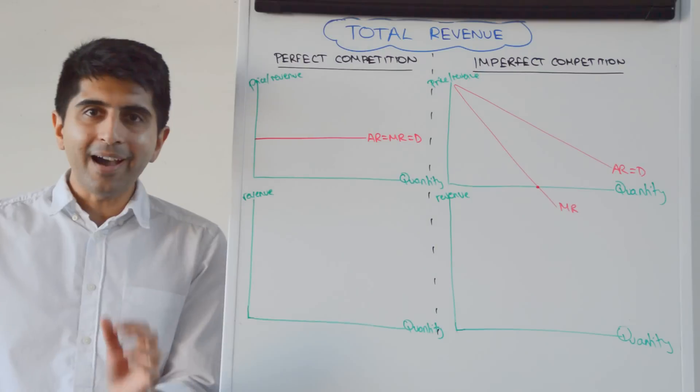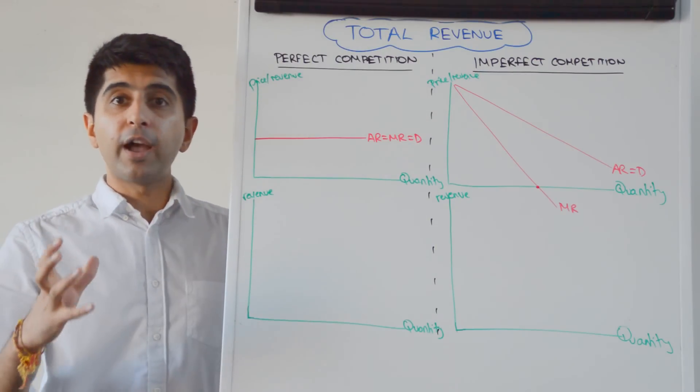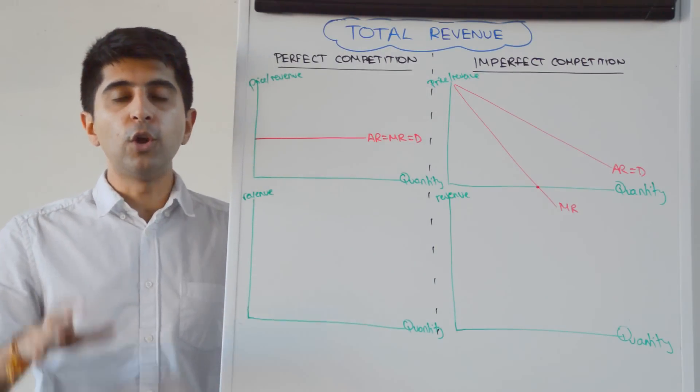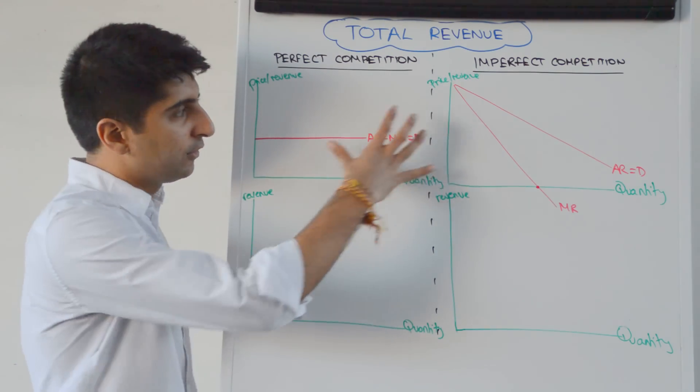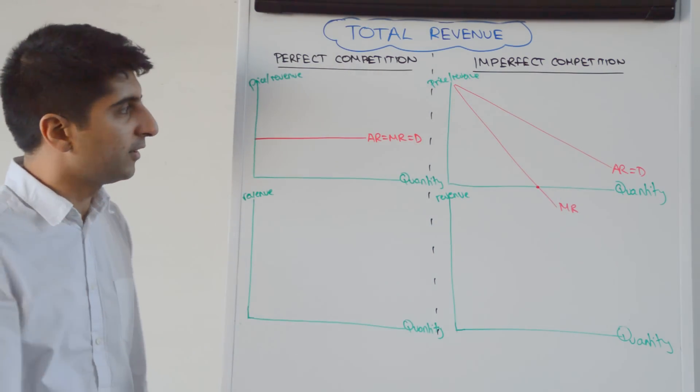In perfect competition, it will look different to what the curve looks like in imperfect competition. The key thing is to remember the AR and MR curves that we derived in my previous video on revenue. Watch that video if you're unsure about why the AR and MR curves look like this in both perfect and imperfect competition.